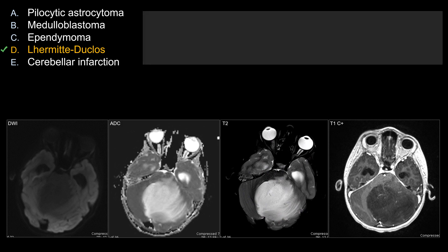On diffusion-weighted sequence and the ADC map, you can see that this expansile lesion has lots of areas of increased diffusivity — ADC value is high, so bright on ADC. There are also areas with relatively normal diffusivity compared to the adjacent tissue. Importantly, on diffusion-weighted sequence, you do not see an area of restricted diffusion. That's important because if you do see restricted diffusion in terms of a neoplasm, you should be thinking about something that is hypercellular.